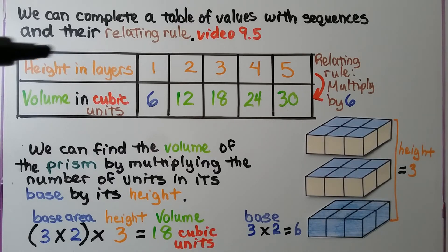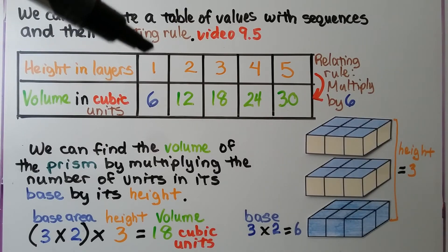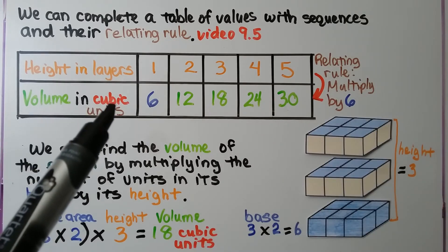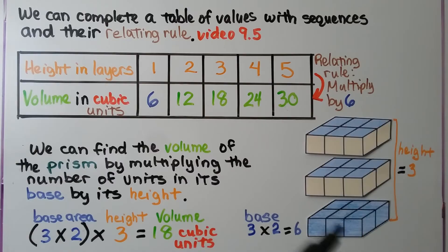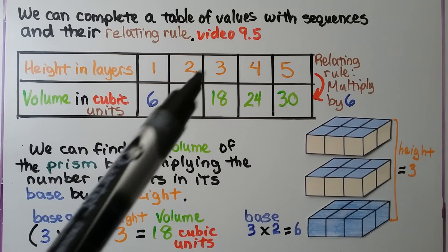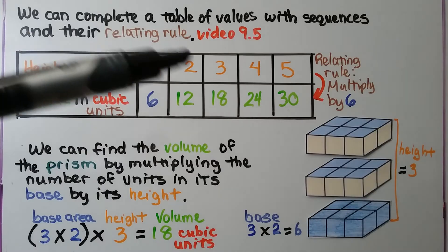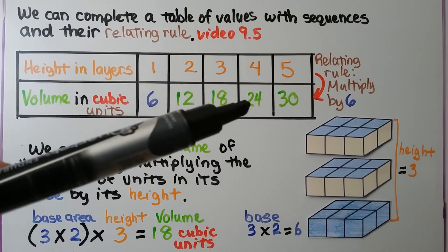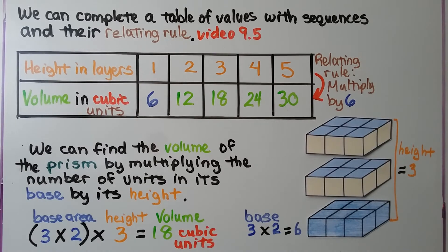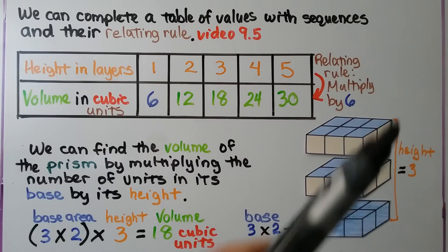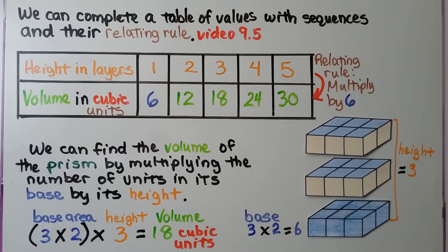We have height in layers as one sequence: one layer, two layers, three layers, four layers, five layers. And the volume in cubic units: one layer is 3 times 2, that's 6; two layers is 12; three layers is 18. Our relating rule is multiply by 6: 2 times 6 is 12, 3 times 6 is 18, 4 times 6 is 24, 5 times 6 is 30. We find the volume by multiplying the base area — 3 times 2 — by the height, 3 layers, giving us a volume of 18 cubic units.